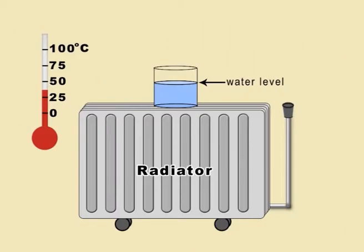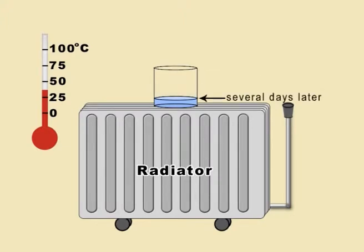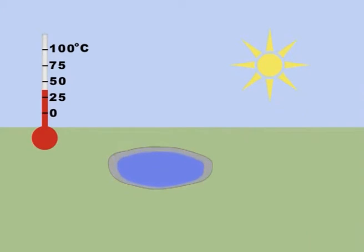Liquid water evaporates at lower temperatures than 100 degrees Celsius, only more slowly and without boiling. That is why a puddle of water shrinks and disappears on a sunny day.